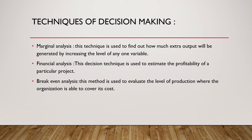Marginal analysis: this technique is used to find out how much extra output will be generated by increasing the level of one variable input. There are two types of factors of production: fixed factors, such as rent — which remains fixed whether you produce one unit or 1,000 units — and variable factors, such as labor, which increases as production increases. This analysis is called marginal analysis.